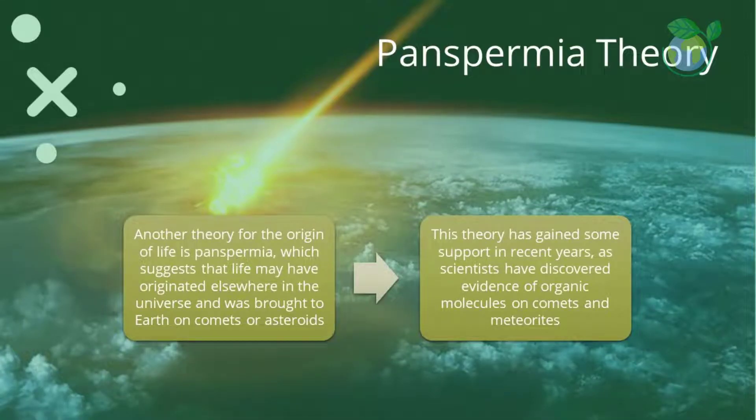Another theory for the origin of life is panspermia, which suggests that life may have originated elsewhere in the universe and was brought to Earth on comets or asteroids. This theory has gained some support in recent years as scientists have discovered evidence of organic molecules on comets and meteorites.